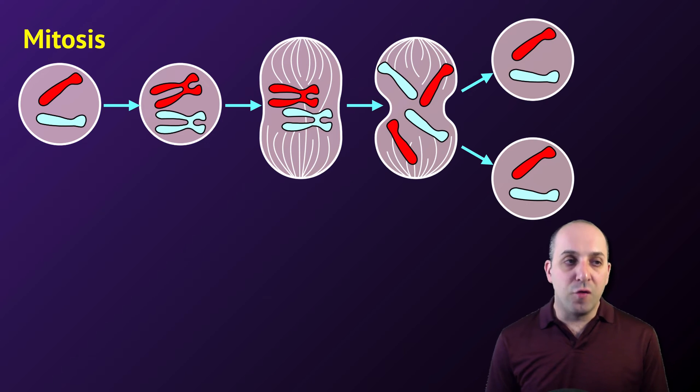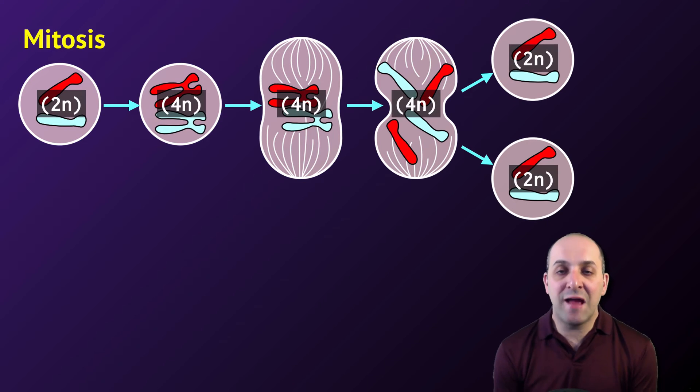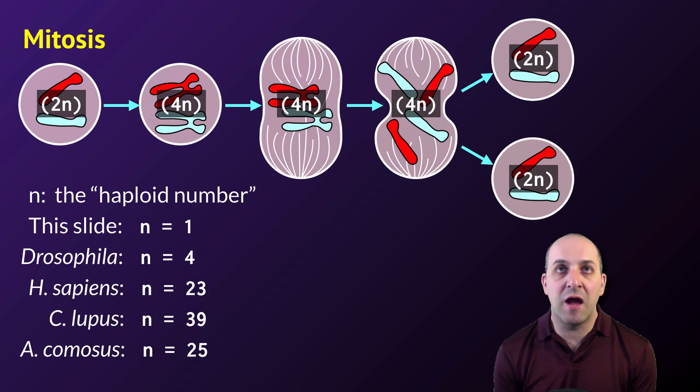Let's look at an overview of mitosis to get a handle on what's going on. For the purpose of this illustration, the DNA is always existing as chromosomes, even though we know that that's not actually how the DNA exists during interphase. To keep track of what's happening during mitosis, we'll use a concept known as the haploid number, which we symbolize with N. N is the number of unique chromosomes found in an organism. In the case of the organism shown in this slide, N is equal to one.